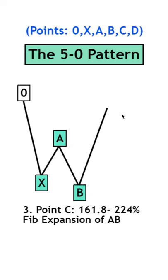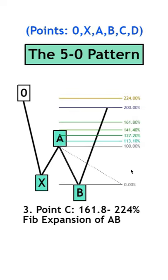Next, to get point C, we'll need another Fibonacci expansion, except this time we'll be measuring from move A to B, and this one needs to land between 161.8 and 224.